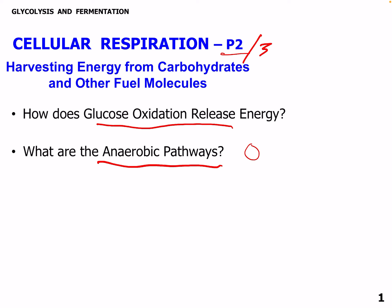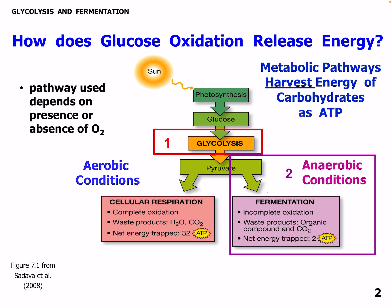Anaerobic means no oxygen is used. So how does glucose oxidation release energy? We have different metabolic pathways — catabolic and anabolic. Catabolic pathways harvest energy and carbohydrates to ATP. Pathways used depend on the presence of O2. Anaerobic is the lack of oxygen, and this ends up in fermentation with incomplete oxidation and CO2 and organic compounds as waste products, and only two ATP are produced.